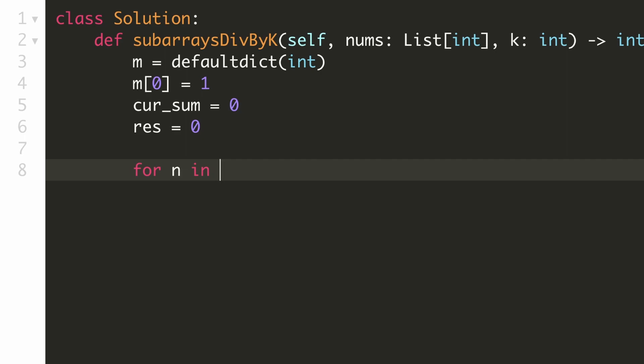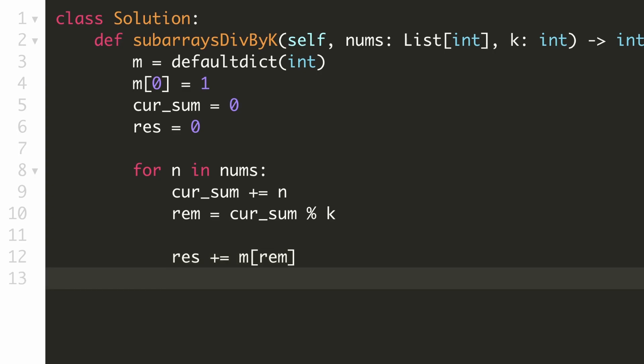Now we'll go through all the numbers in the array. We'll add our current value to the prefix sum. Let's keep a variable to store the remainder of this prefix sum when divided by k. And now if we have seen this remainder before, we'll increment the result by the count of the previous occurrences of this remainder.